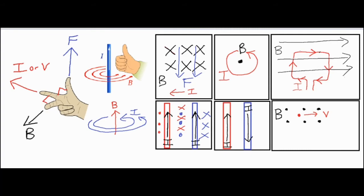Now I'll analyze the red wire using the first right-hand rule. I set my pointer finger pointing up the page. Because the red wire feels a magnetic field outward from the blue wire, I make sure my middle finger is pointing out of the screen. With my pointer finger straight up and my middle finger out, my thumb points to the right — so the red wire gets pushed to the right. For the blue wire, it feels the inward magnetic field from the red wire, so my middle finger goes into the screen.